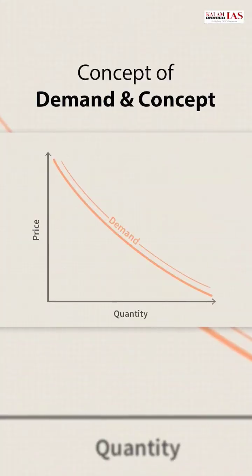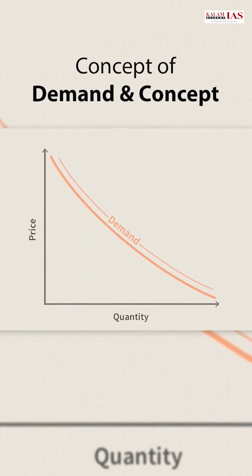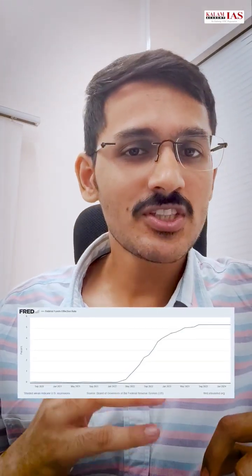Demand and supply ka concept toh aksab samashteyo. Whenever the price of any good increases, its demand will reduce. Aisa hi kuch huwa US ke dollar ke saath mein. Federal Reserve of USA increased the interest rate from 0.1% to 5.33% in just a span of 18 months, and the resulted impact was reduction in demand for US dollar in the international financial market.